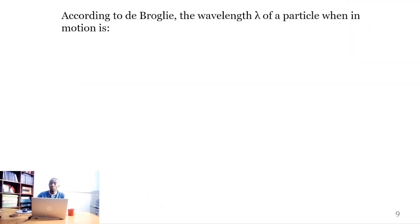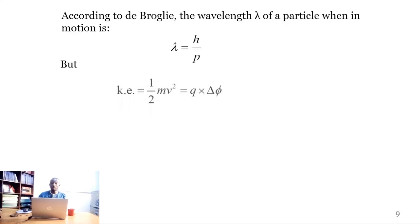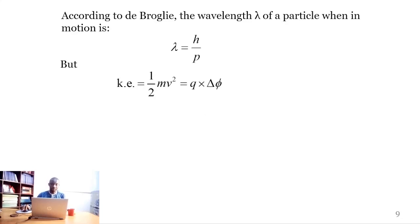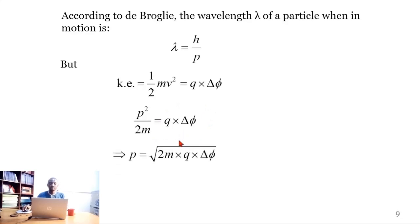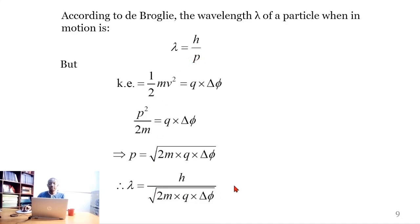According to de Broglie, the wavelength of a particle in motion is λ = h/p. We know that the kinetic energy equals the change in electric potential energy: E_k = qΔΦ. Expressing kinetic energy as p²/2m and making p the subject gives p = √(2mqΔΦ). Substituting into the de Broglie formula gives λ = h/√(2mqΔΦ).